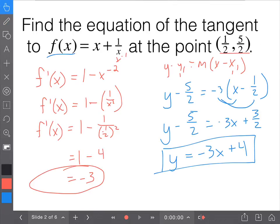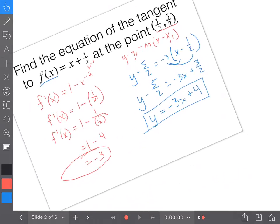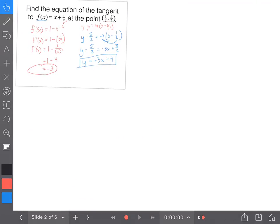Let me show you what I'm talking about. So this first one, we did find the equation of the tangent to this. Let's say, what if it didn't say tangent, what if it said normal? Find the equation of the normal to f(x) = x + 1/x.